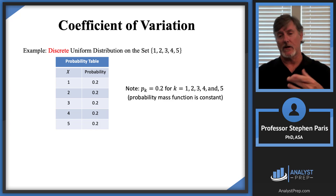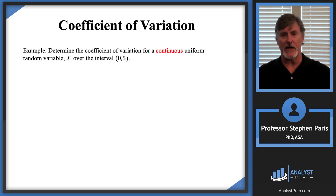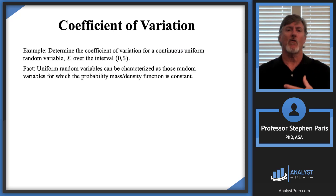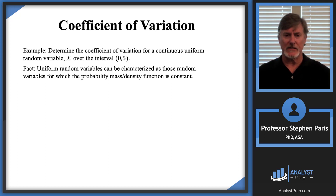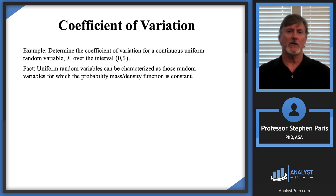Uniform random variables, whether discrete or continuous, can be characterized as those for which the probability mass or probability density function is constant. For a discrete uniform random variable, the probability mass function is constant; for a continuous uniform random variable, the probability density function is constant. So this continuous uniform distribution tells me that the PDF is constant over the interval from zero to five.